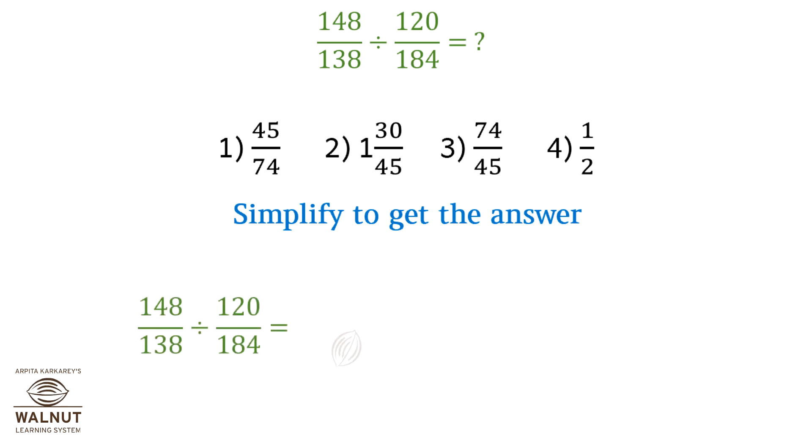148 upon 138 divided by 120 upon 184 is 148 upon 138 into 184 upon 120. You make the second fraction inverse and add a multiplication sign. 4 into 30 is 120, 4 into 37 is 148, 2 into 69 is 138, 2 into 92 is 184.